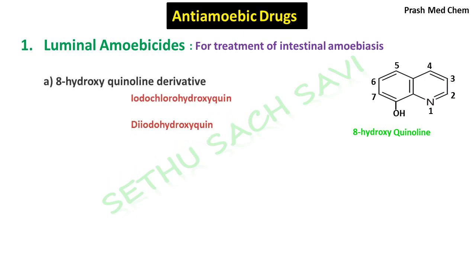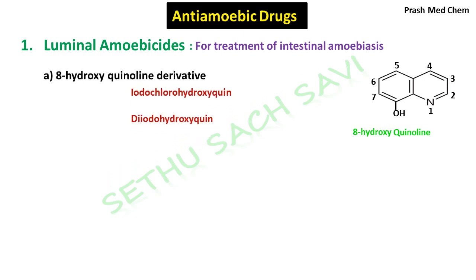Some of the derivatives of 8-hydroxyquinoline were shown to have luminal amoebicidal action. And the drugs are iodochlorohydroxyquin and diiodohydroxyquin. Now, iodochlorohydroxyquin is also called as quiniodochlor or clioquinol. Whereas diiodohydroxyquin is also called as iodoquinol.